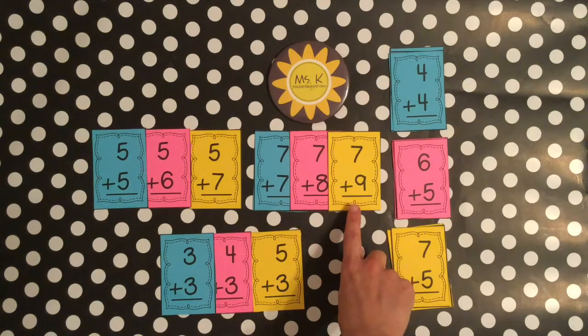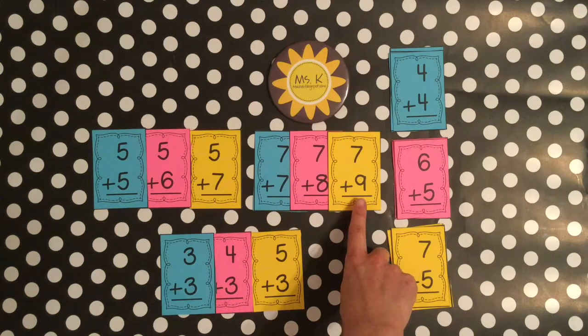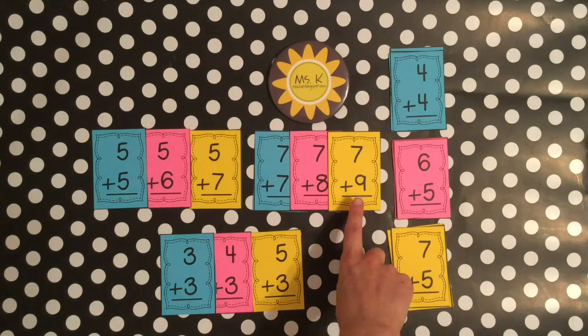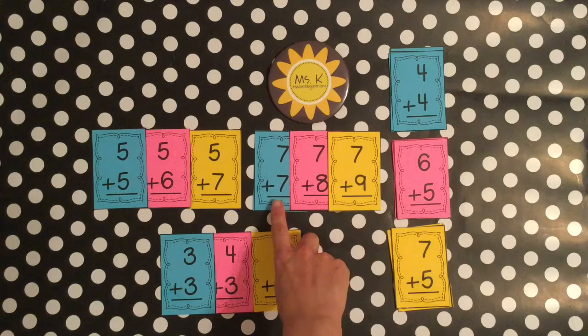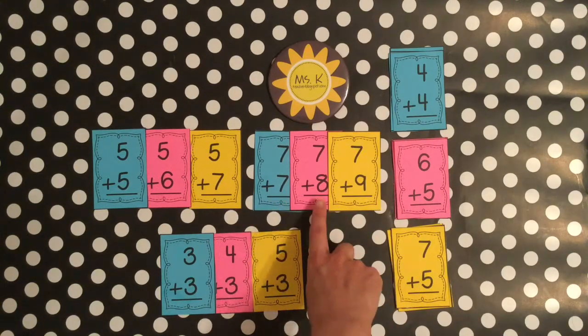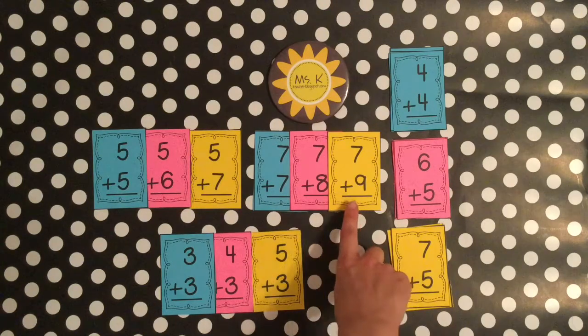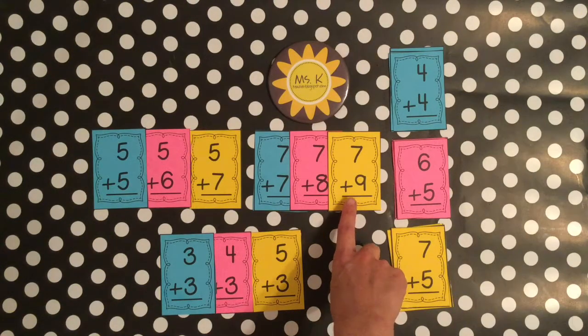And seven plus nine is another one that was difficult for me as a child and probably for kids today. So you learn seven plus seven, that one's easy because it's a double, 14. Seven plus eight, 15. And another one, seven plus nine is 16.